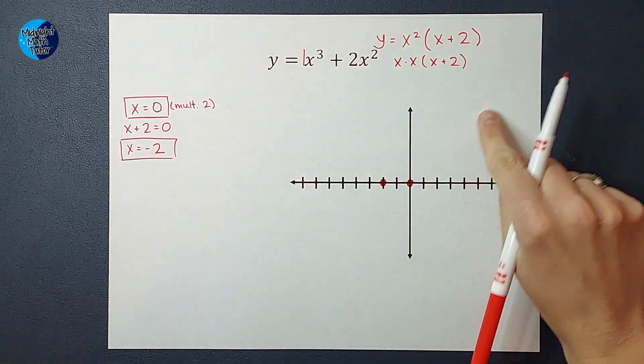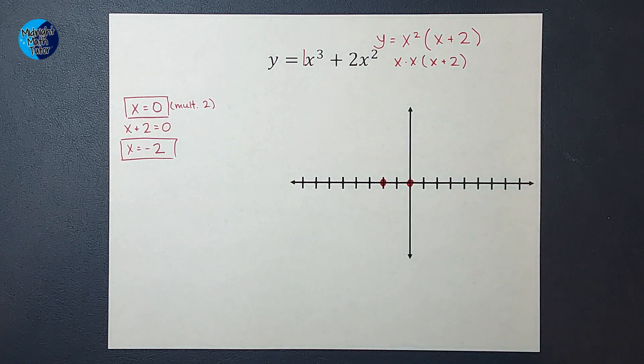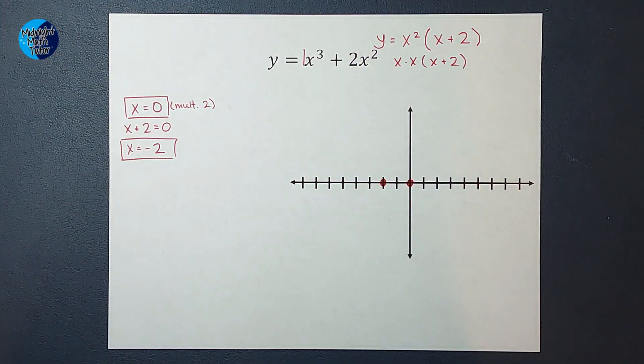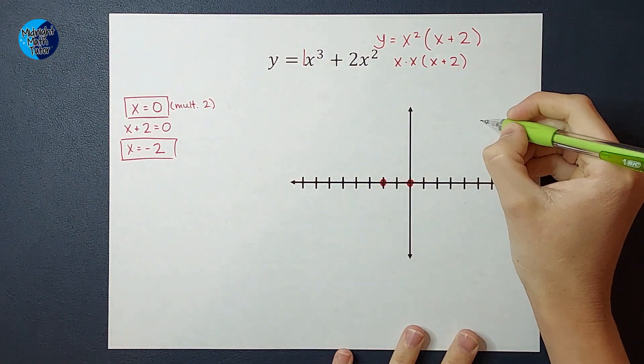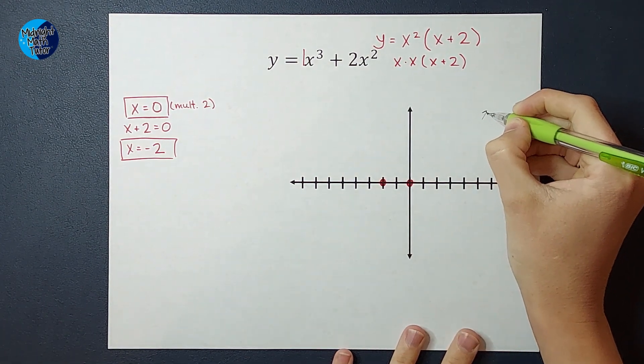So I'm just going to put a little arrow here in pencil that shows the right side of my graph is going to go up.